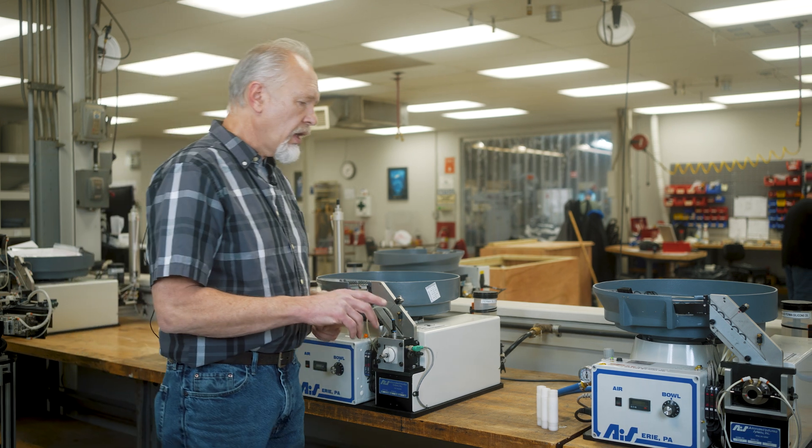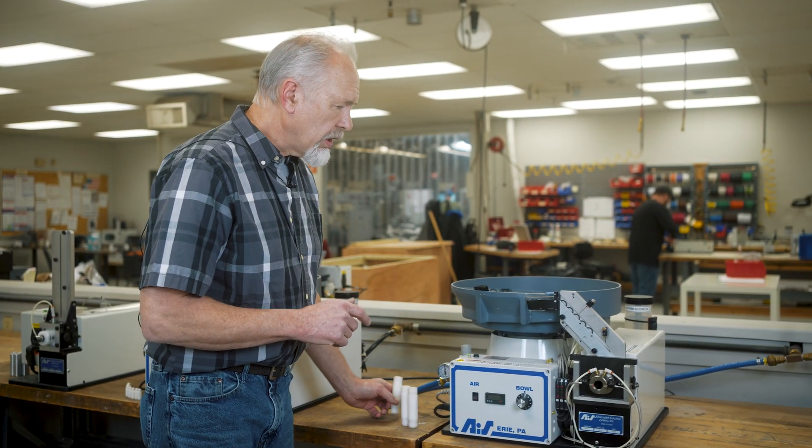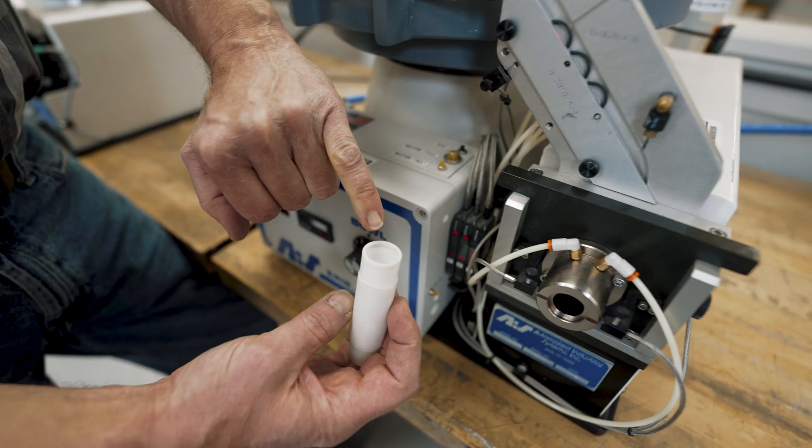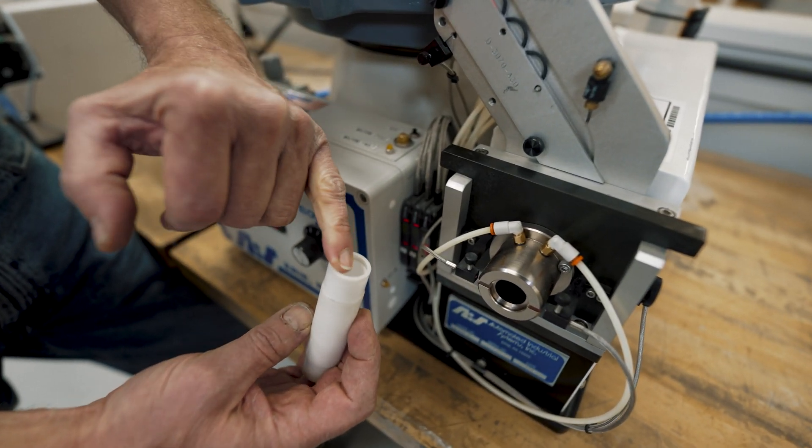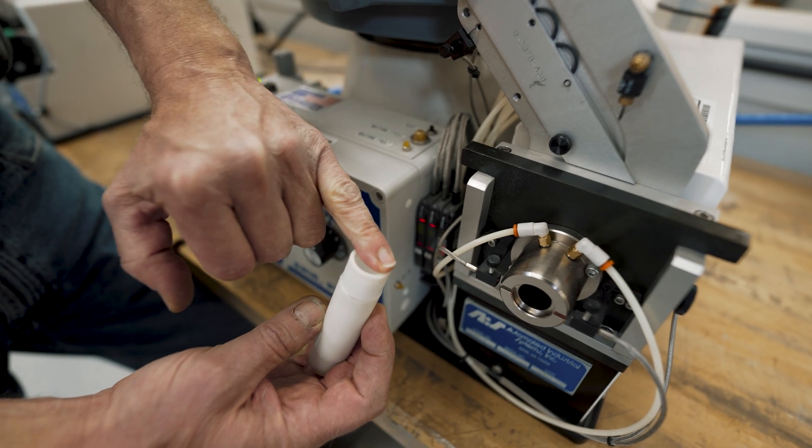Now, down here at this last machine, this is actually called an ISP. It's an internal seal placing machine. If you have an application where you've got to go onto the inside instead of the outside of something, we might be able to set you up with something similar to this.